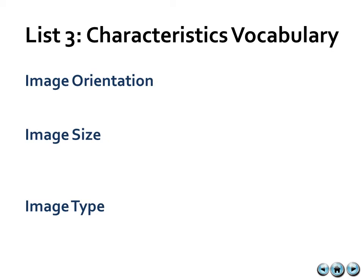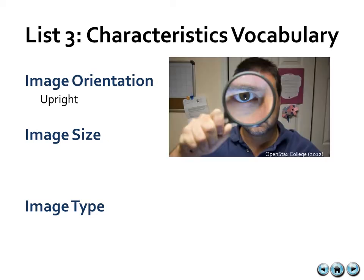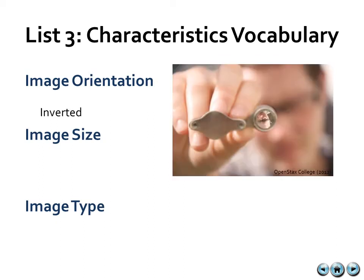Alright, moving on, we're going to next look at characteristics. There are really three main characteristics we want to focus on when we're trying to distinguish an image. The first is the image orientation. The image itself that we see can be upright, as in this photo of this man's eye, or it can be inverted, as in this photo of this man's face.